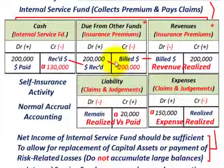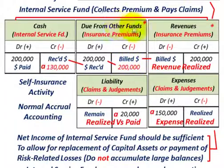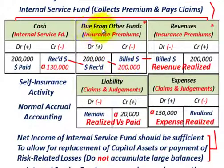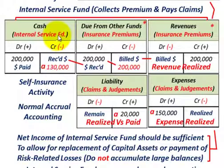When we actually receive the cash — the cash transfer made from those other governmental funds — we would credit, reducing our 'due from other funds' by $200,000 since we received the total amount. Then we debit, or increase, our cash by $200,000 in the internal service fund.